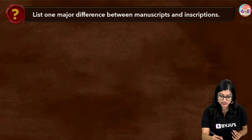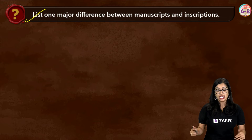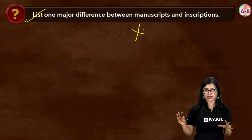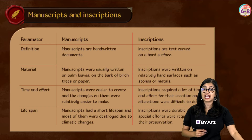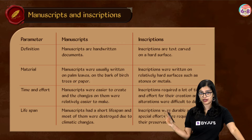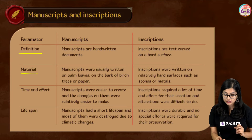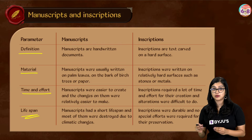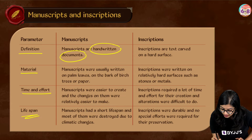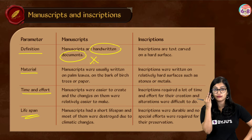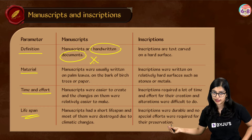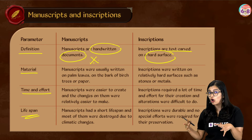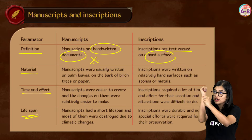The next question is: list one major difference between manuscripts and inscriptions. This is a very commonly asked question in exams. There are four ways to differentiate them: by definition, by material used, by time and effort, and by lifespan. Manuscripts are basically handwritten documents — from the Latin origin meaning 'handwritten'. Inscriptions are carved on hard surfaces; tools are used to make those inscriptions, not ink.